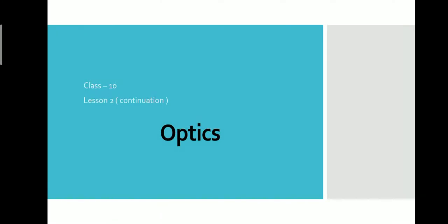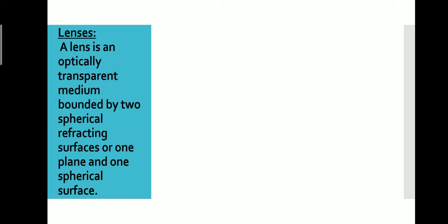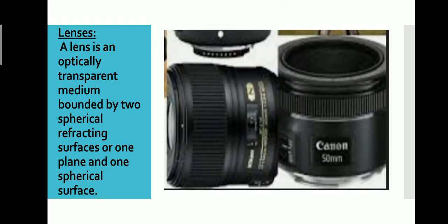Hello everyone. This is a continuation of the lesson Optics for grade 10, and in this video we are going to see the types of lenses. A lens is an optically transparent medium bounded by two spherical refracting surfaces or one plane and one spherical surface. A lens should be a transparent medium and it should refract the light waves.